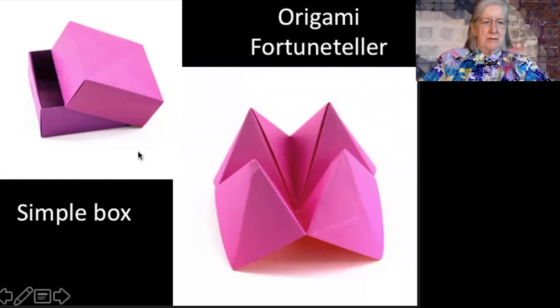Some other traditional forms you may have run into include a simple box made from two pieces of square paper, one for the lid and one for the bottom. And the shape of that can be varied as well.